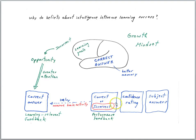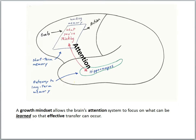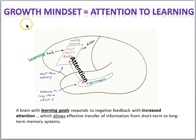So after you get the information that you got the answer wrong, a growth mindset brain kind of wants the right answer. Back to our picture — for effective learning, you have to transfer information from the short-term system into the long-term memory system through the hippocampus, and attention systems are critical. So for a growth mindset person, whose attention system responds effectively to an incorrect response, they crank up their attention and can effectively process the correct answer and get it into the long-term memory system. We could say that folks with a growth mindset have an attention to learning — they're very prepared to attend to learning situations. A brain with learning goals, characteristic of a growth mindset, responds to negative feedback with increased attention, which allows effective transfer of information from short-term to long-term memory systems.